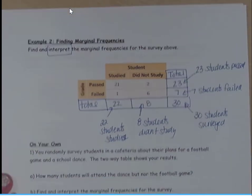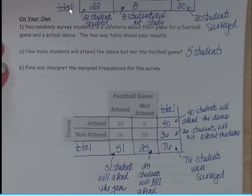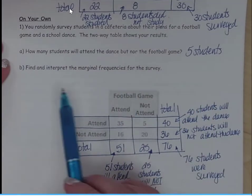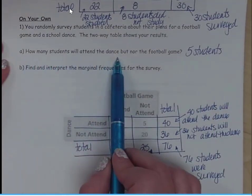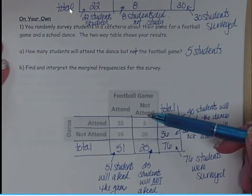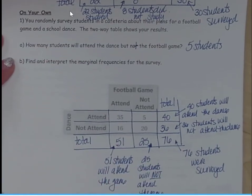All right, go ahead. Let's complete on your own number one. Hit pause and play when you are ready to reveal your answers. All right. So we've got 51 students will attend the game, 25 will not, 76 surveyed, 36 will not attend the dance, and 40 will attend the dance. How many students will attend the dance but not the football game? That would be 25.